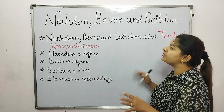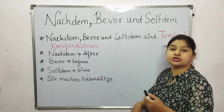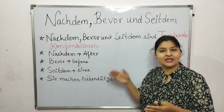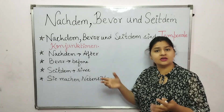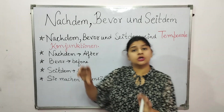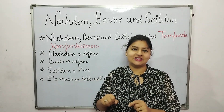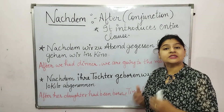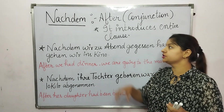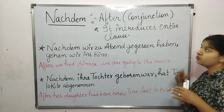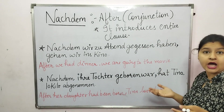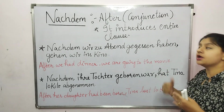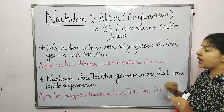There is one thing common to all three conjunctions: sie machen Nebensätze — they make Nebensätze. Nebensätze are sentences where we place the verb at the end. So now let's talk about our first conjunction, nachdem, which means 'after.' It is a conjunction, which means it introduces an entire clause.